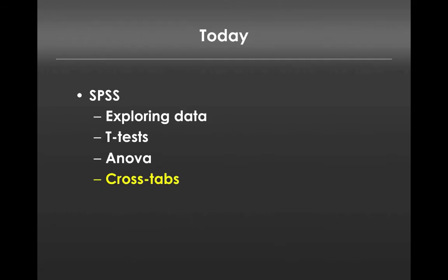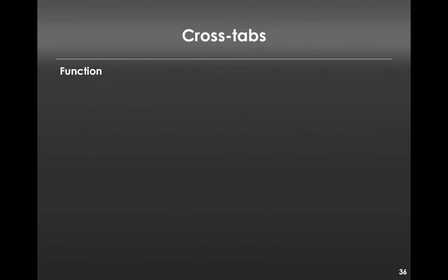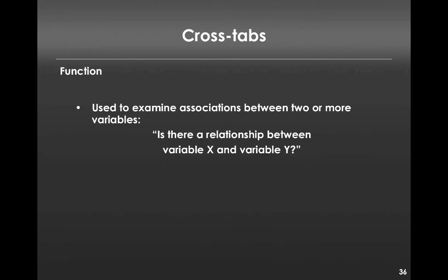The last approach I want to talk about is known as a crosstab. A crosstab allows us to examine the associations between two or more variables — for instance, is there a relationship between variable X and variable Y. Most critically, it allows us to do this for variables that are only nominally scaled, meaning variables like gender (male, female) and its relationship to another variable like choice of stores: online versus brick-and-mortar. Up to now we've had no tools to test the relationship between those two variables, but crosstabs lets us do that.